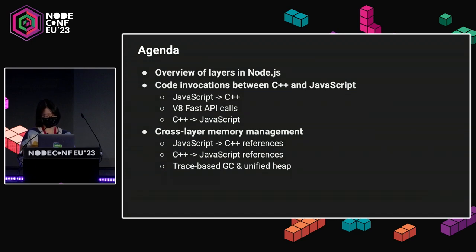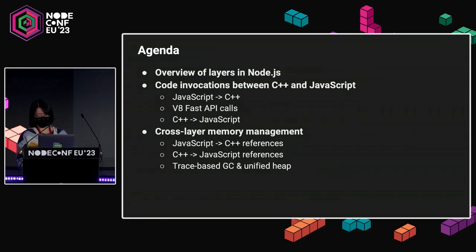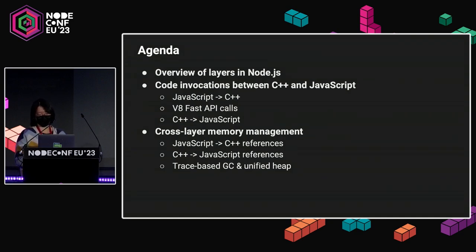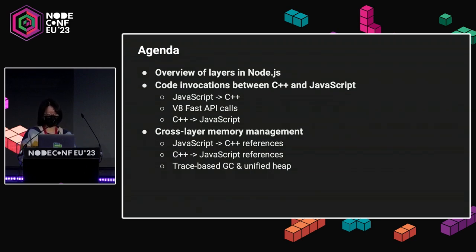If you are interested in hacking on Node Core — for example, if you participated in the first contribution to Node Core workshop yesterday — hopefully this can save your time in figuring out how things work. If you are already familiar with how to build C++ add-ons, the C++ part of this talk probably would be fairly straightforward to you. If you are new to C++, the syntax is similar enough to JavaScript, so you can just look at the methods and variable names and grasp the concepts.